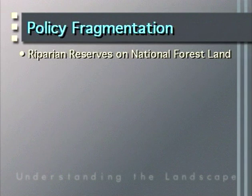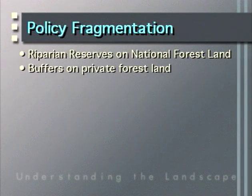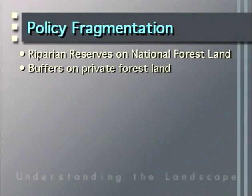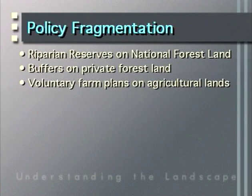Moving from public forest lands to private forest lands, we see required buffer strips. Oregon passed a Forest Practices Act in 1972 and by the late 1970s was requiring buffers, now as much as 100 feet wide with partial harvest allowed. When we cross the fence from private forest land into private agricultural lands, buffers are no longer required. Voluntary farm plans try to provide some ecological function, but a farmer can legally plow down to the stream's edge.